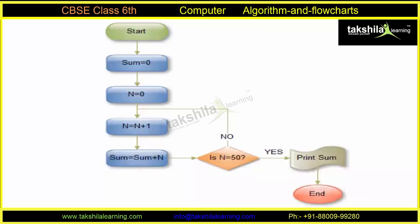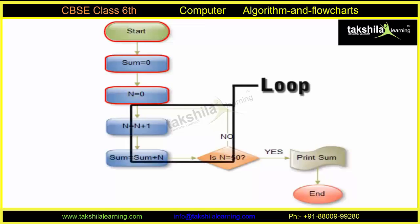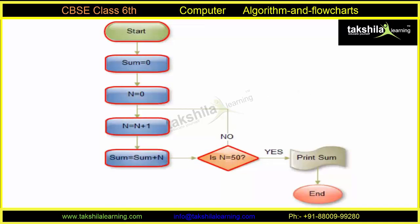Students, here is the flow. Start. Sum is equal to 0. n is equal to 0. Loop: n is equal to n plus 1. Sum is equal to sum plus n. If n is equal to 50, exit loop.